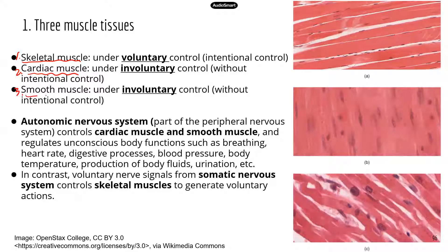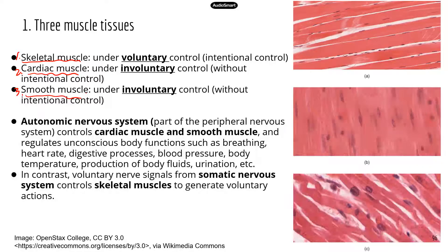The third type is smooth muscle. Smooth muscle is usually found in visceral organs and body tracts — for example, urinary tract, gastrointestinal tract, respiratory tract. Smooth muscle is also present in the stomach, small intestine, and large intestine. Smooth muscle can also be found in blood vessels — this is how your blood vessels can dilate or constrict, because of the contraction and relaxation of smooth muscle.